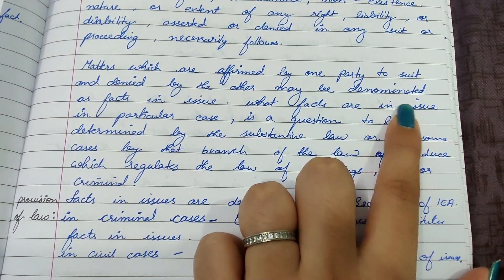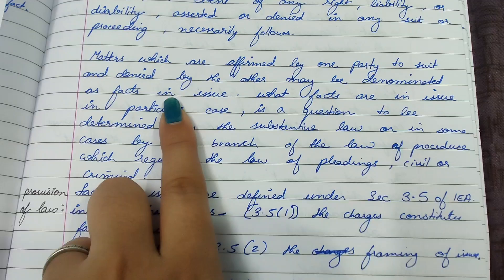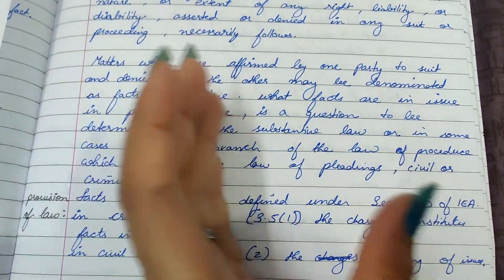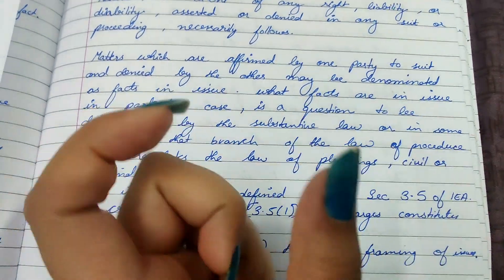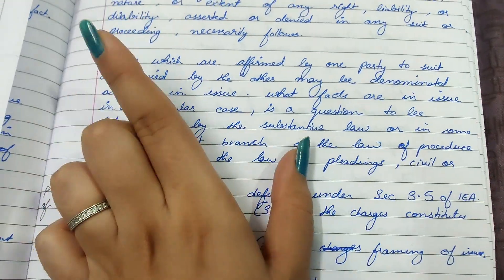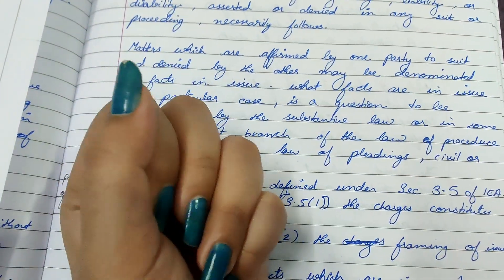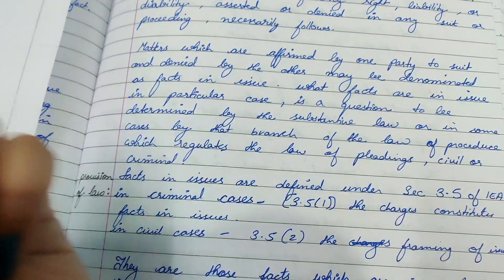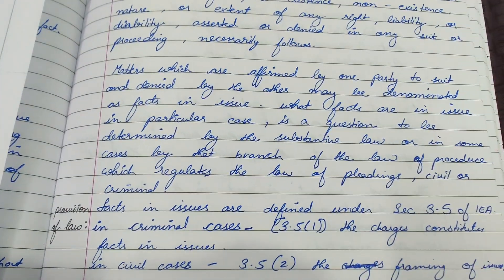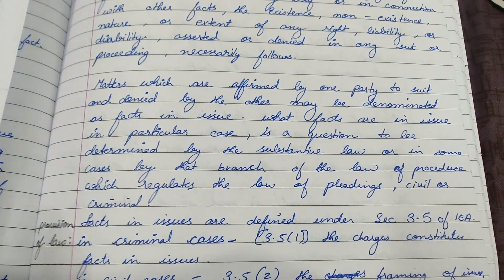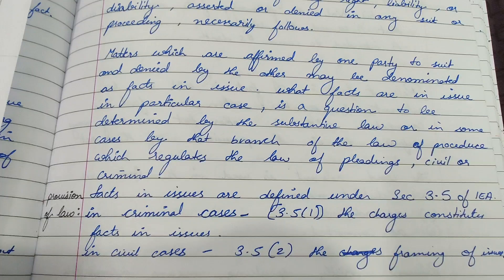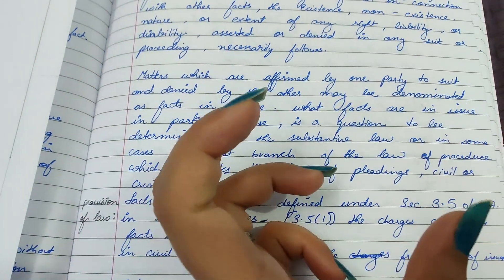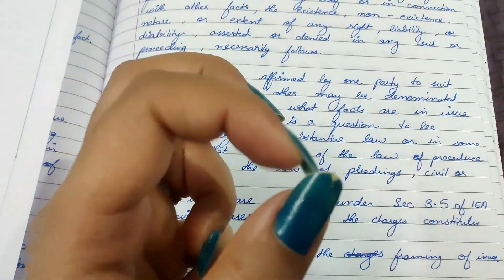Matters which are affirmed by one party to a suit and denied by the other may be denominated as facts in issue. When one party denies and the other accepts certain facts, those facts are called facts in issue — because both parties are saying different things, and which version to accept becomes the issue. That is why they are called facts in issue.